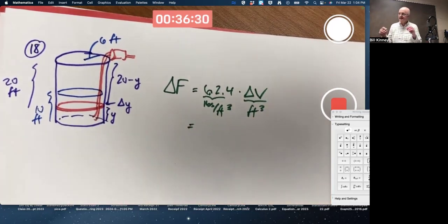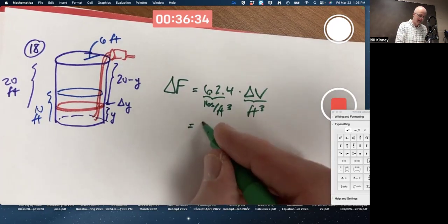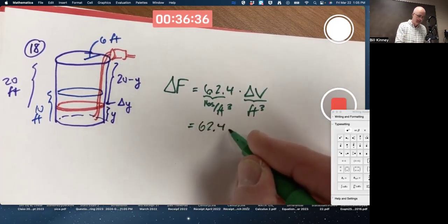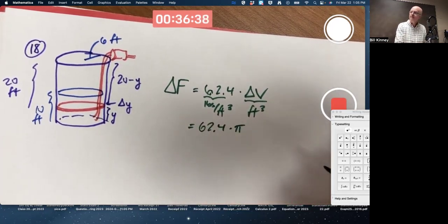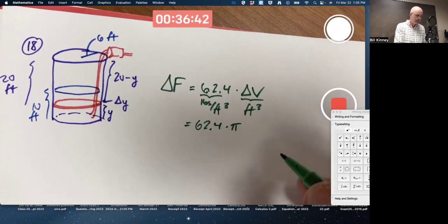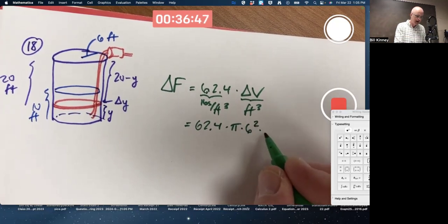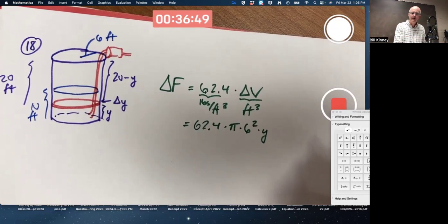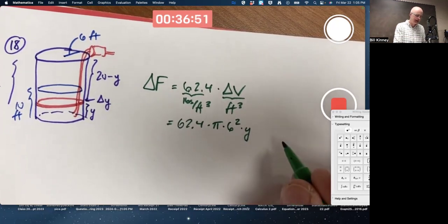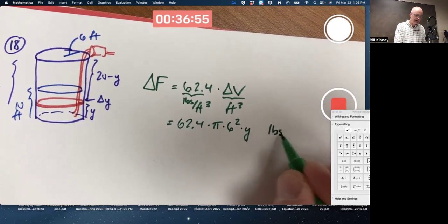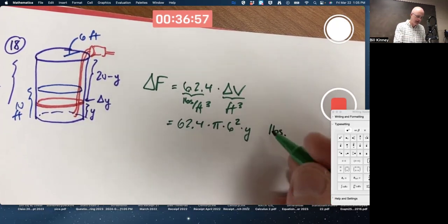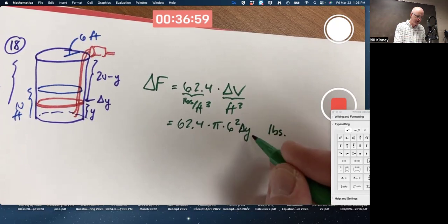This is a thin disc. It's cylindrical with a tiny height. That's pi r squared for the area times the height. Radius is 6. Pi times 6 squared times the height, which is delta y. All this is going to be the small amount of weight in pounds. Did I forget my delta y? Yes, that should be a delta y there.